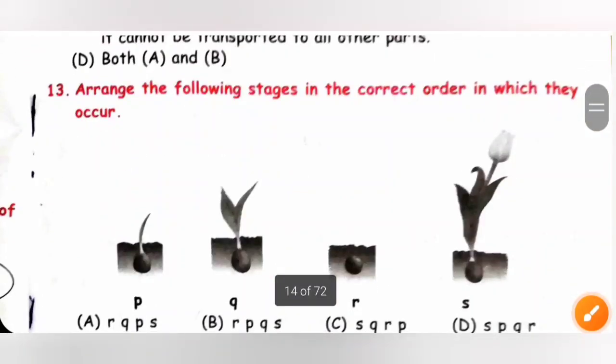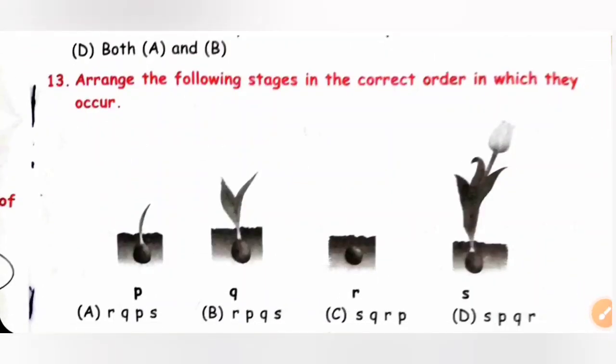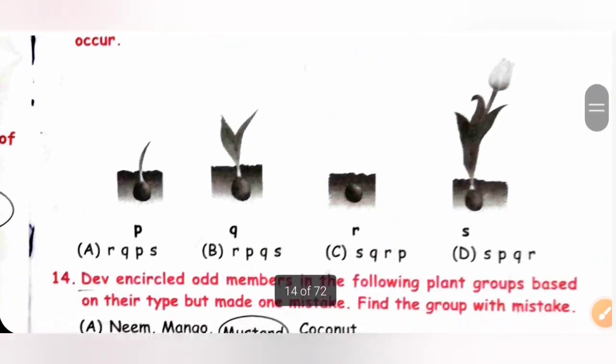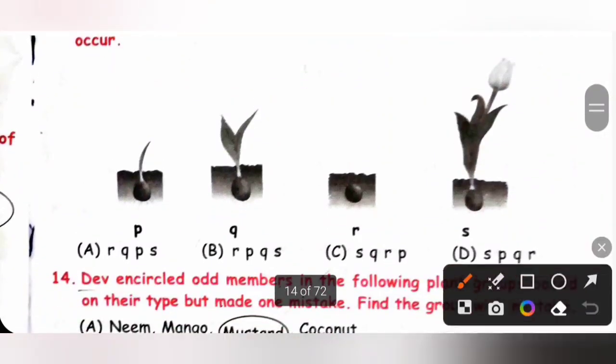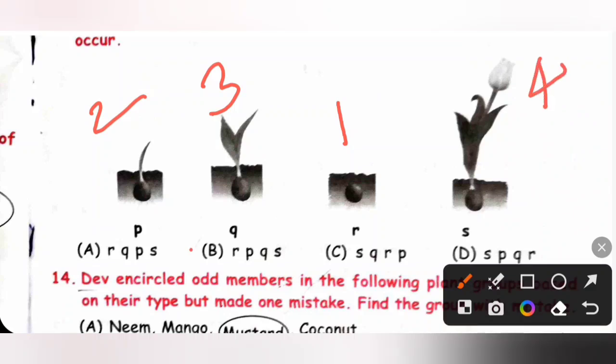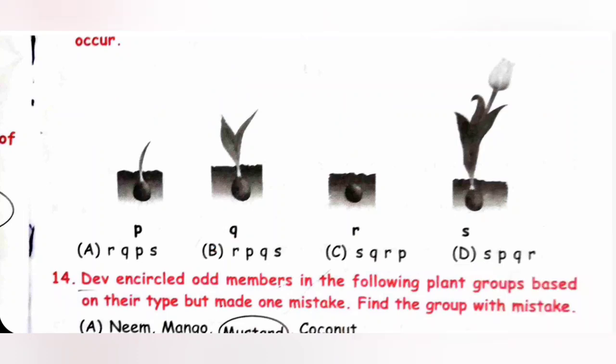Thirteenth, arrange the following stages in the correct order in which they occur. Please pause the video and check the picture. So 1, 2, 3 and then 4. So R, P, Q and S. Yes, option B is the correct answer.